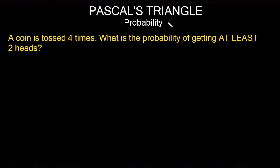The first problem says: a coin is tossed four times — what is the probability of getting at least two heads? Note the phrase 'at least,' so you could have two, three, or four heads. The first question is: how many times are you going to toss it? The total here is four.